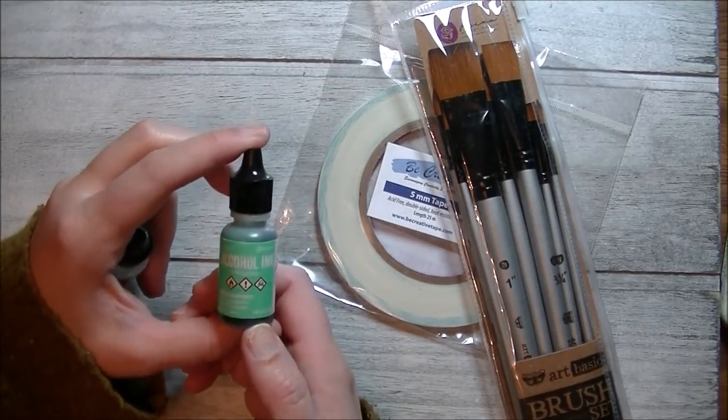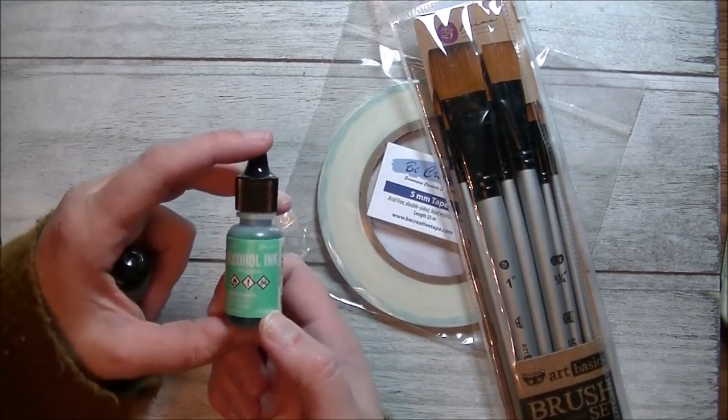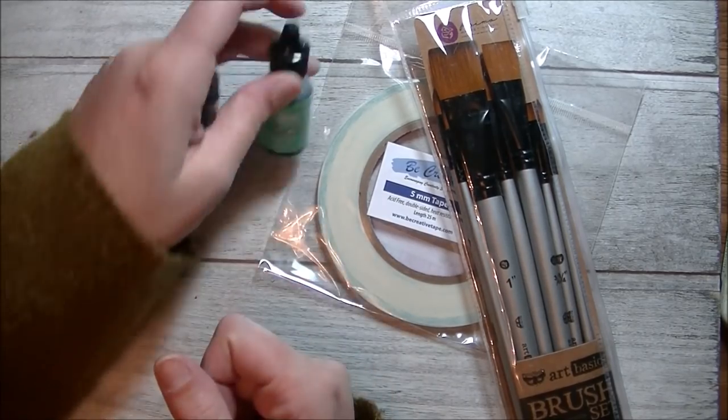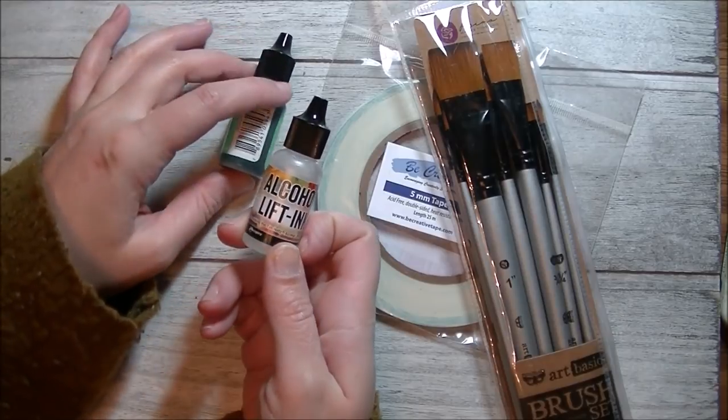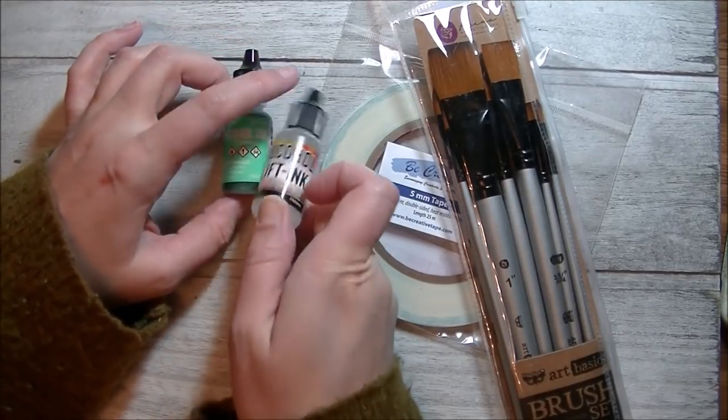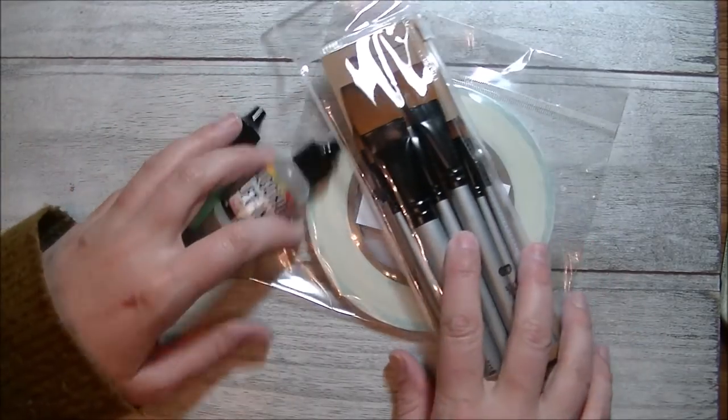I also picked up pistachio alcohol ink. I knew I didn't have this color. She didn't have a lot of them left, but I figured I'd add that one to my collection. And then I also picked up the alcohol lift ink, the reinker. I have the ink pad downstairs. I got it in a Simon Says Stamp kit. So that's everything I picked up from there.